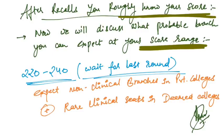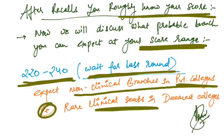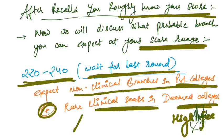If your score range is around 220 to 240, you can wait for the last round. You can expect non-clinical branches in private colleges and rare clinical seats in deemed colleges with high fee structure. Clinical seats you can expect include anesthesia.